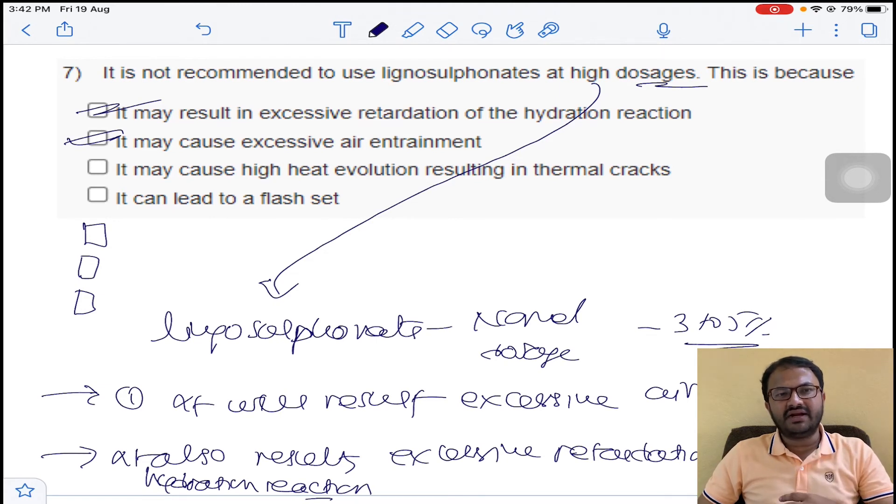If you select only one correct answer out of 2, you will get half marks. If you select 2 out of 2, you will get full marks. If you select any wrong answer, you will not get anything. So this is both option A and B for question number 7.